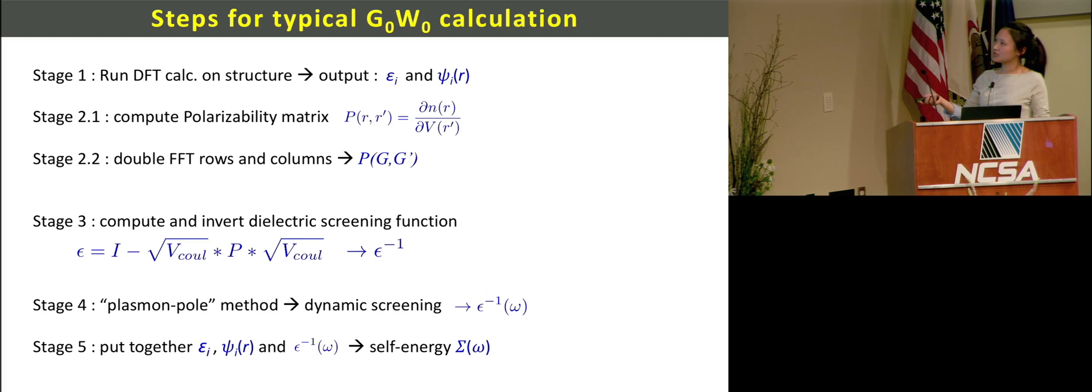This is the typical steps for GW calculations. First step is run DFT calculation and get the energy and wave function. We calculate the polarizability matrix, which is how the electrons talk to each other. Then we do the double FFT rows and columns, so we get polarizability in G, G prime space. Then we compute the dielectric matrix and do the inversion. This PE epsilon is very big matrix, so the inversion also involves big matrix. At stage four, we do the plasmon pole method and calculate the dynamic dielectric matrix. Then we put together all these numbers and get the self-energy.